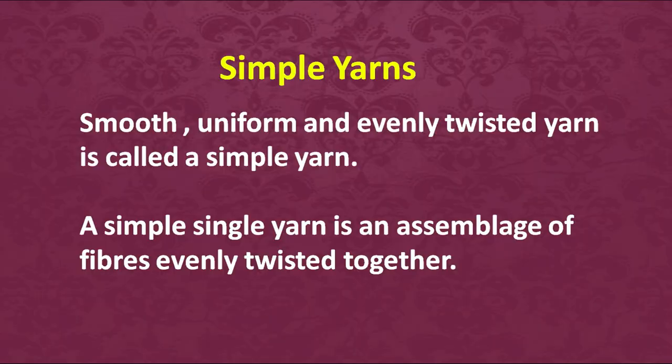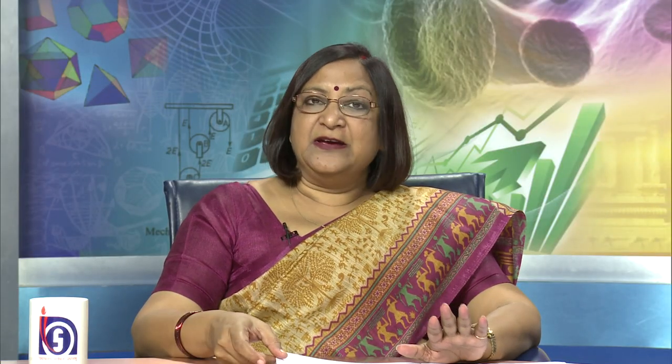The basic properties of simple yarn are that they are smooth, uniform, and evenly twisted throughout their length — basically fibers assembled together with the right amount of twist given to them. The resulting fabrics, like poplin and cambric, are very smooth to touch and very fine. The finer the yarn, the finer the final fabric obtained.